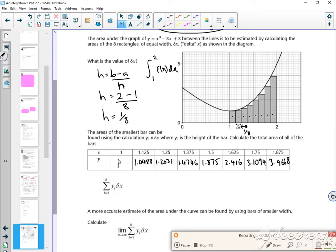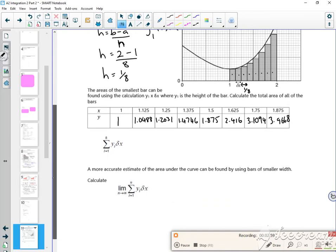So all it is, is just the sum of all the heights, because it's like the first rectangle is an 8th times by 1. The second rectangle is an 8th times by 1.0488. So if I add them all up, it'll just be 1 eighth multiplied by all of these.